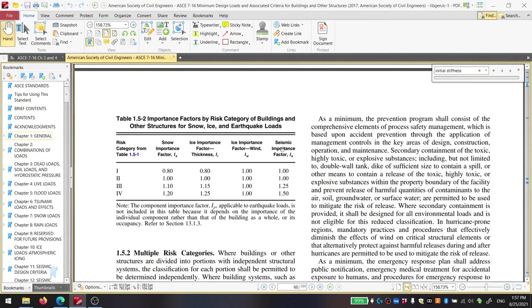These importance factors are then referenced in the individual sections where you calculate wind and seismic and snow load, et cetera. But they're simply the combination of the risk category and the type of loading that you're dealing with. And notice also these only relate to environmental loadings. We don't tend to see these for live load and dead load.